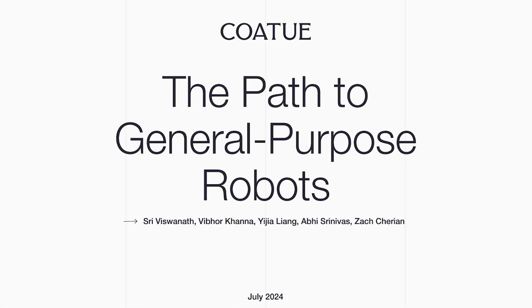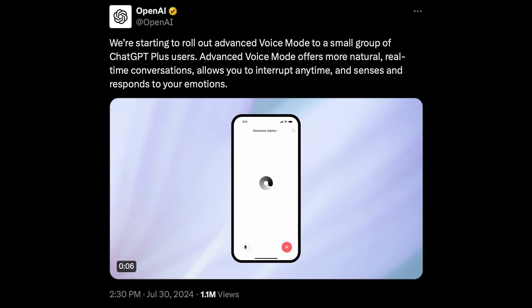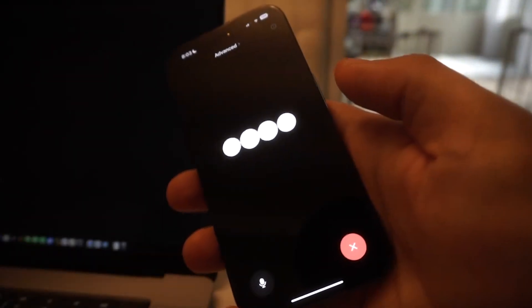We look at a very interesting PDF created by Kotu Management, an investment firm with over $7 billion in assets under management. They've created a comprehensive report on the current state and future potential of the humanoid robotics industry, and what they're projecting for the future is absolutely insane. Finally, OpenAI has released their advanced voice mode to select users, and we'll take to Twitter to see what amazing things people have already been doing with it.